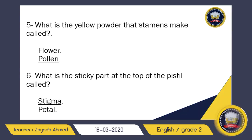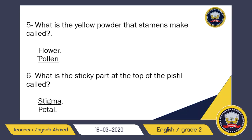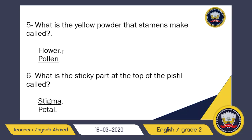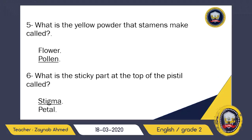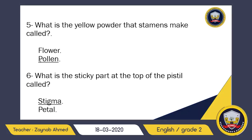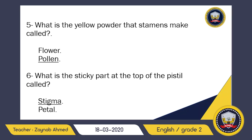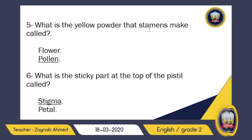Number five: what is the yellow powder that stamens make called? The stamen is the part of a flower which makes yellow powder, and that yellow powder is called pollen. It cannot be 'flower' as the answer — flowers are not only yellow, they come in different colors. Pollen is the yellow powder which stamens make.